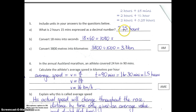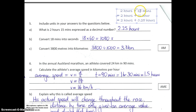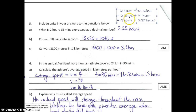So this is how you actually get 2.25. We've got 2 hours and 15 minutes, so that's 2 hours plus 15 minutes. The key step is to convert the 15 minutes into hours. 15 minutes is a quarter of an hour, so we have 2 hours plus a quarter of an hour. Changing that quarter to a decimal gives us 2 hours plus 0.25 hours, which is 2.25 hours.